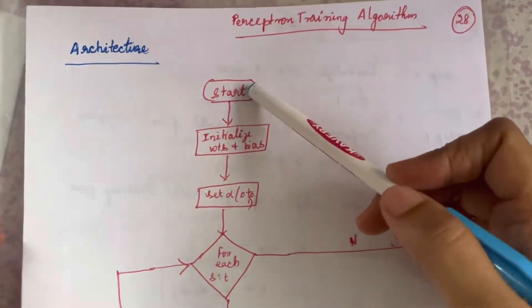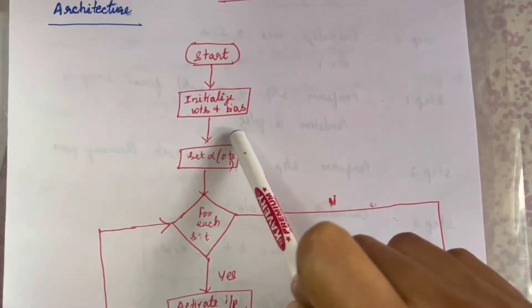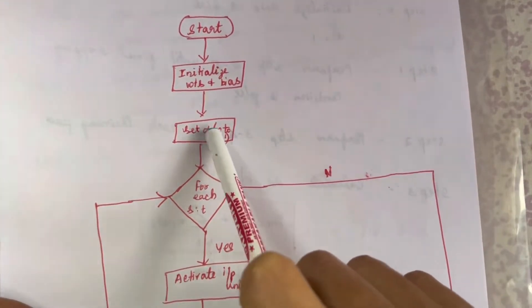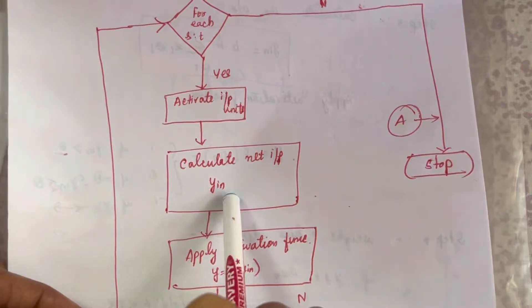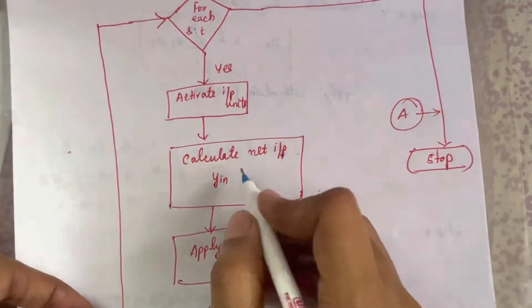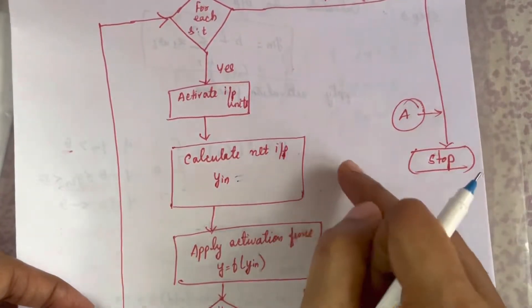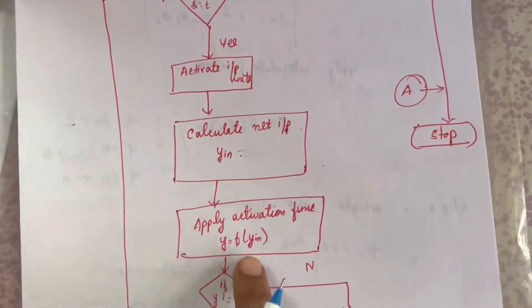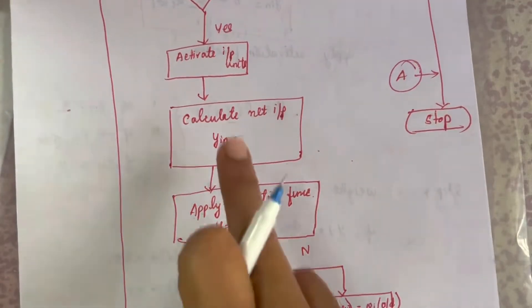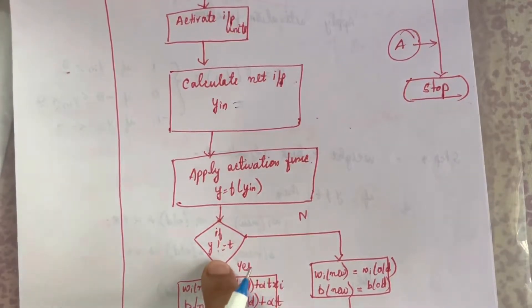Now we will see the flowchart for this perceptron training algorithm. First is start. Then we initialize weights and bias and set the learning rate α between 0 and 1. For each training input pair, you activate the input units, then calculate the net input y_input as: x1·w1 + x2·w2 + x3·w3 + ... + xn·wn + 1·b. After that, you apply the activation function to get y, and then compare y and t.